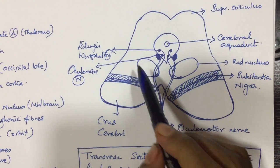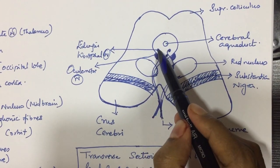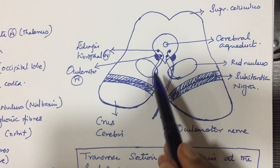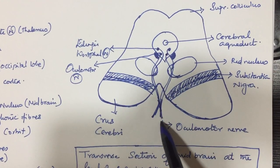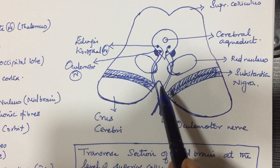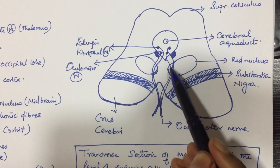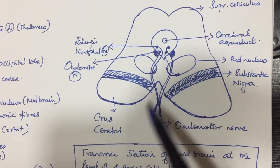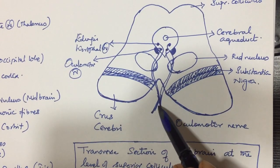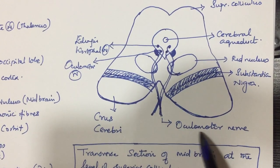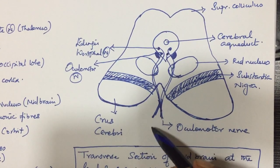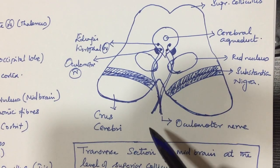The signals from Edinger-Westphal nucleus and the signals from oculomotor nucleus pass via the oculomotor nerve. You can see the oculomotor nerve traverses the red nucleus and it comes out as oculomotor nerve and supplies the extraocular muscles of the eyeball.